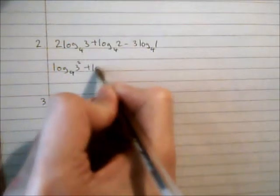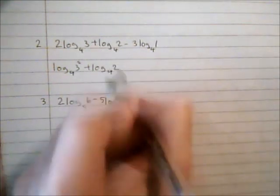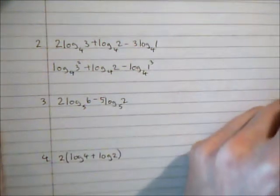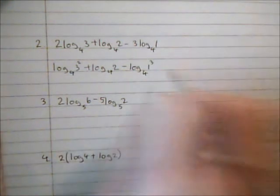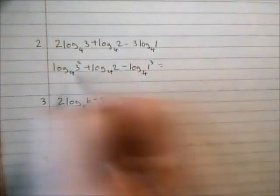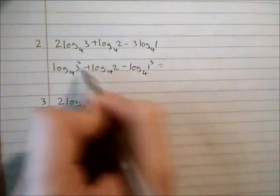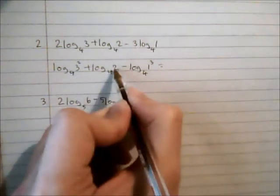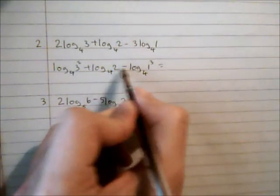When I add I multiply: 3² is 9, 9 × 2 is 18. When I subtract I divide: 18 ÷ 1³.